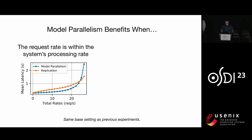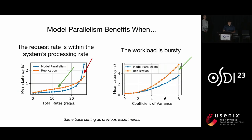Next, we studied the request arrival pattern. When the total request rate is relatively low, model parallelism can help reduce the serving latency. However, when the total arrival rate approaches the peak serving rate of the cluster, the benefit of model parallelism starts to diminish due to its overhead. On the other hand, when the incoming requests become more bursty, model parallelism can further outperform the baseline.